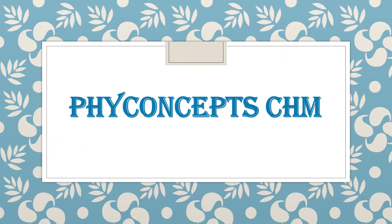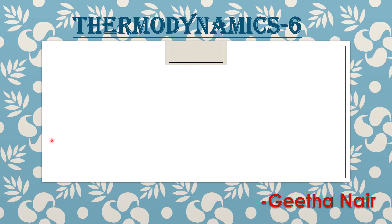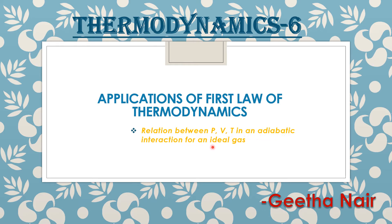Welcome to my channel P Concepts CHM. This is the sixth part of the series of thermodynamics. We will see the second application of the first law of thermodynamics — the first application was seen in the last video. This is the second application: the relation between pressure, volume, and temperature in an adiabatic interaction for an ideal gas.